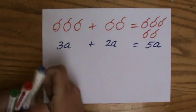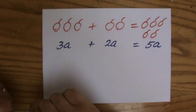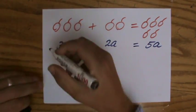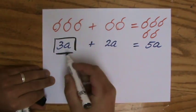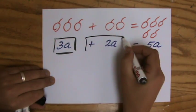And why can I add them? Because these are like terms, and these are like terms, because their letters, the variables, are the same. So I can do 3A plus 2A.